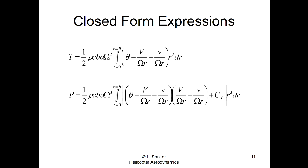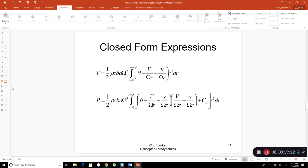Ut² equals Ω²r², and Ω² comes out of the integral. For the power expression, Cl times sine(phi) equals a times (theta minus phi) times phi, which gives terms involving V/Ωr and v/Ωr, while Cd times cosine(phi) contributes a Cd times r³ term. There is a small error in the slide noted during the lecture — the lift curve slope a should be in front of the first term.